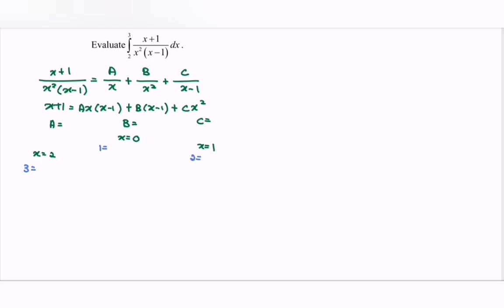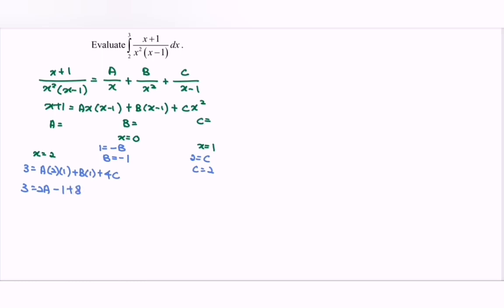Focus on B first. If we substitute x = 0, we get negative B, so B = -1. Next, focus on C. Follow the order: B, then C, then A. If we substitute x = 1, we get C = 2. Finally, focus on A. Substituting x = 2 on the left gives 3. On the right we have A·2·1 + B·1 + 4C. Substituting: 3 = 2A - 1 + 8, so 3 - 7 = 2A, giving 2A = -4, so A = -2.